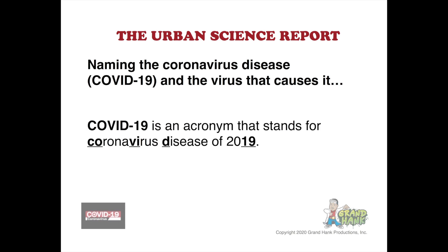So how did COVID-19 get its name? If you look at the coronavirus disease of 2019, what they did was they took the CO off of corona, took the VI for virus, and the D for disease, and the 19 is the year in which this disease was discovered. So now you know when you see that acronym, what it means.